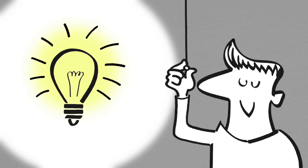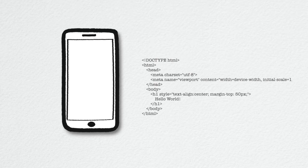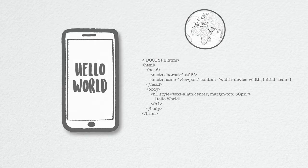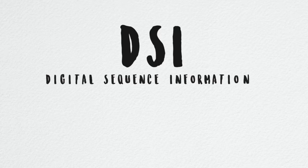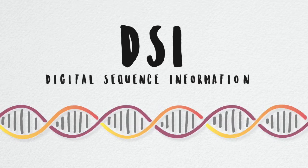There are technologies that are game-changers. Some are widely visible, such as smartphones or the internet. Then there is DSI, digital sequence information, the result of sequencing genomes or proteins.